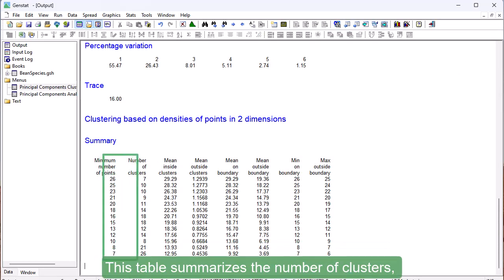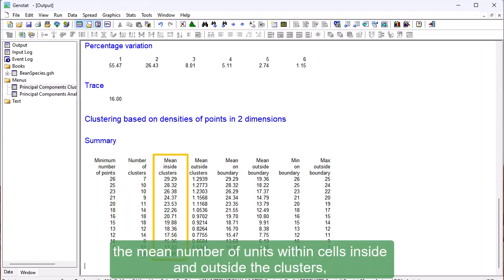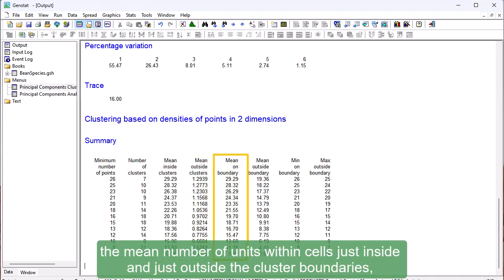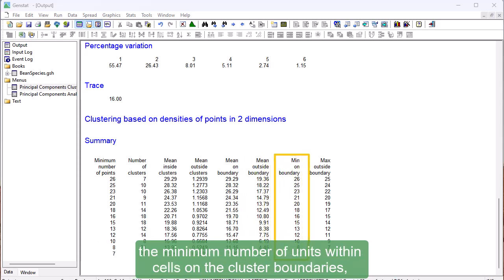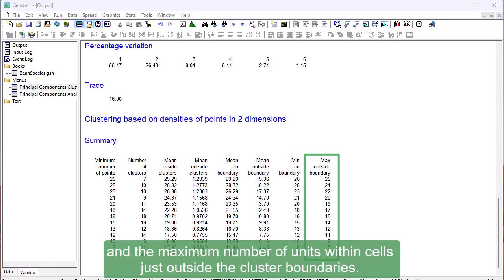This table summarizes the number of clusters, the mean number of units within cells inside and outside the clusters, the mean number of units within cells just inside and just outside the cluster boundaries, the minimum number of units within cells on the cluster boundaries, and the maximum number of units within cells just outside the cluster boundaries.